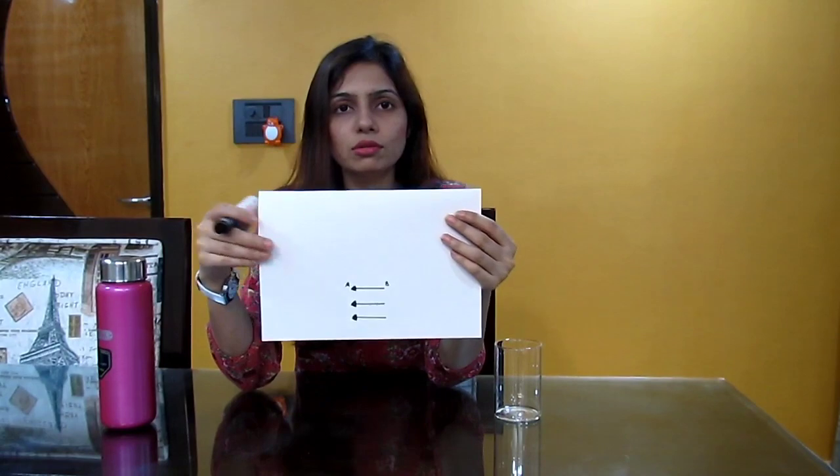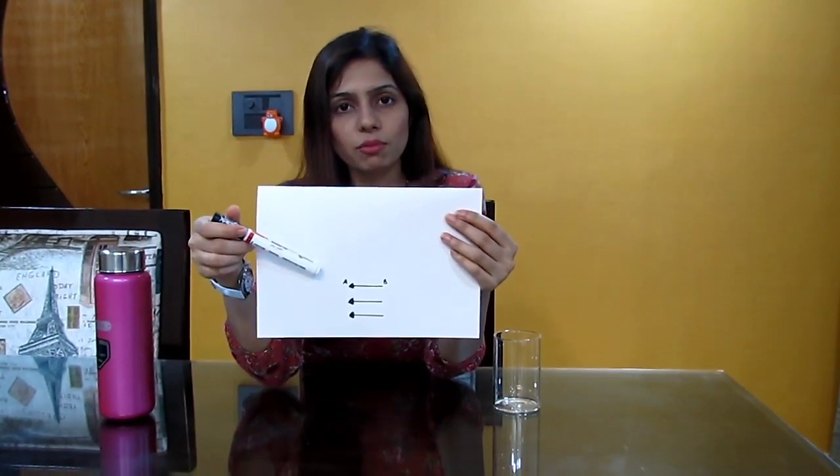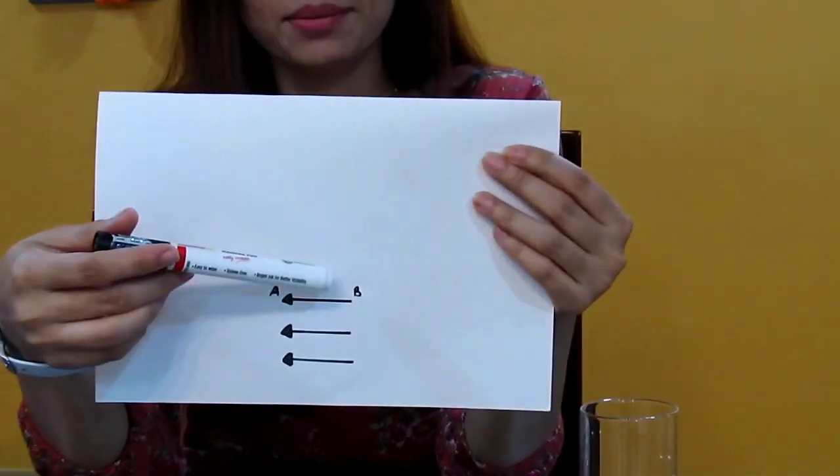Take a piece of paper and draw anything. It could be your favorite animal or a table, chair. Here I have drawn three arrows and I have also marked the ends of my arrows as A and B.